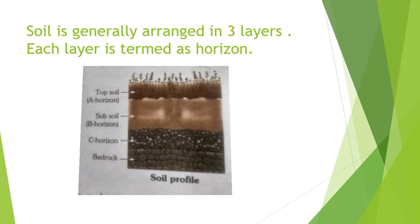The layer just under the topsoil or A-Horizon is called B-Horizon, also known as Subsoil. This layer is slightly harder and more compact, and has very little humus or organic matter. It is rich in soluble minerals and iron oxides, and is light in color.